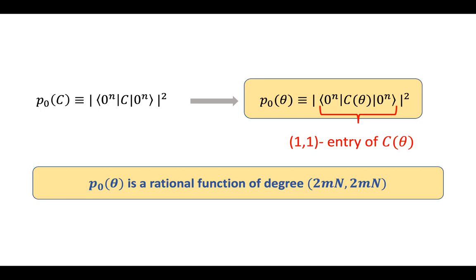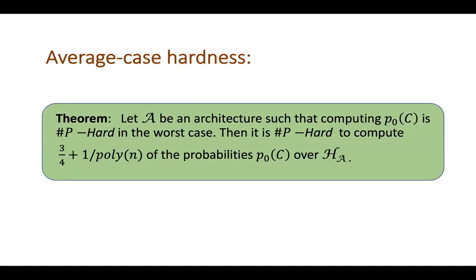Okay, that proves the Sharp-P hardness. It's a reduction from the worst case to average case of the Sharp-P hardness. So specifically, we show that there exists architecture A, such that computing p0 of C, that particular point is Sharp-P hard, with some high probability three quarters plus something that vanishes. This three quarters can easily be improved to larger fractions. The point is that it's greater than a half.